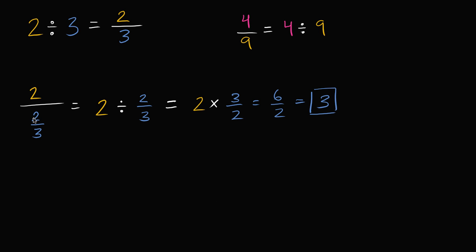Let's do a few more of these and keep making them a little bit more complicated, just so we get some good practice. Pause the video and see if you can do it on your own. Let's do something really interesting: negative sixteen over nine, over three over seven. What is this? Can you simplify this complex fraction?